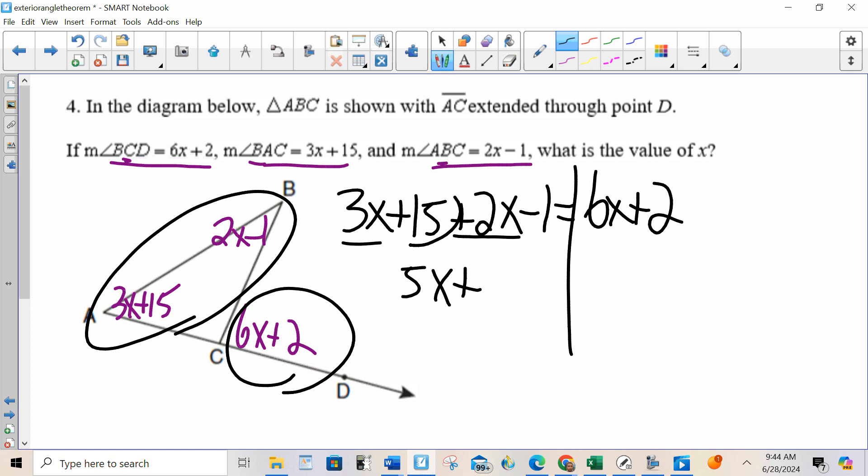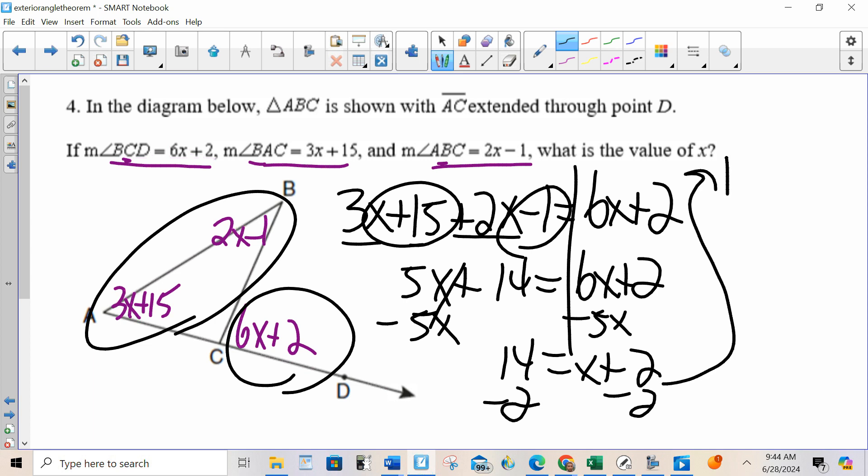5X plus 14 equals 6X plus 2, minus 5X minus 5X. So, 14 equals X plus 2, subtract, 12 is equal to X.